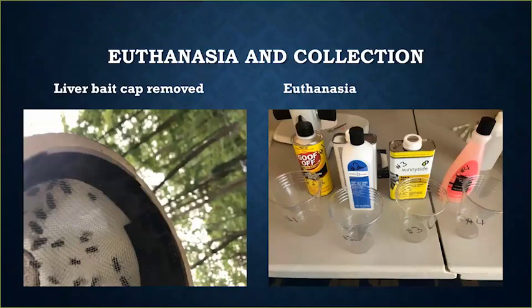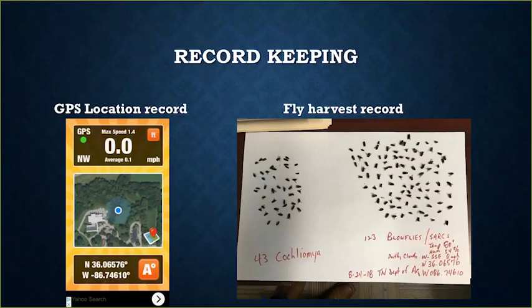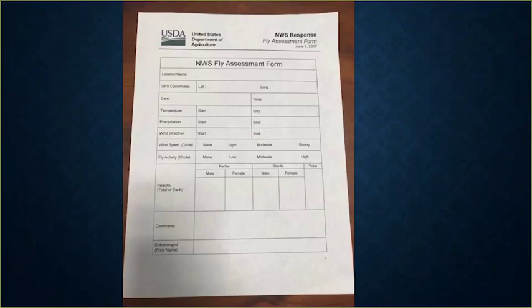Record keeping is extremely important. For each deployment location I have a GPS record, and at least in the beginning I sorted flies by species onto a sheet of paper, separated the Cochliomyia species, and recorded temperature, humidity, wind direction, wind speed, GPS location, and date. Eventually, especially in the two trainings, we began using a new fly assessment form developed by Julie and Denise Bonilla after the Florida incident. For each deployment of the trap, we've got good records showing all of the required fields of information.